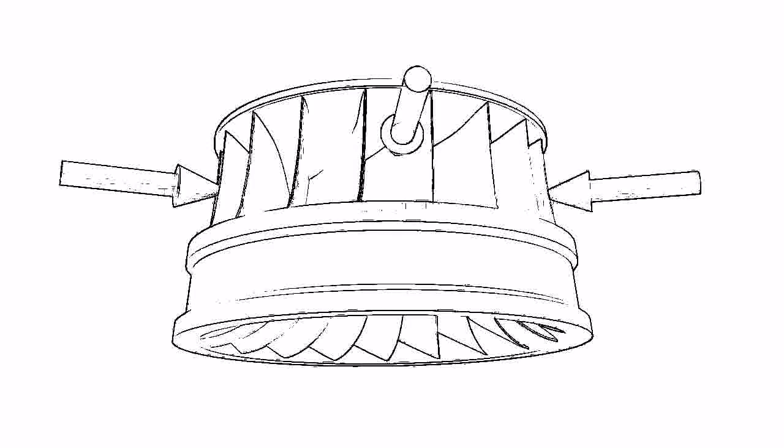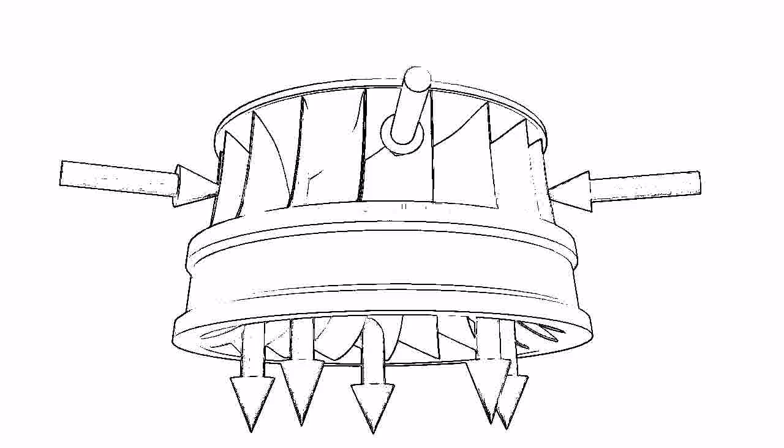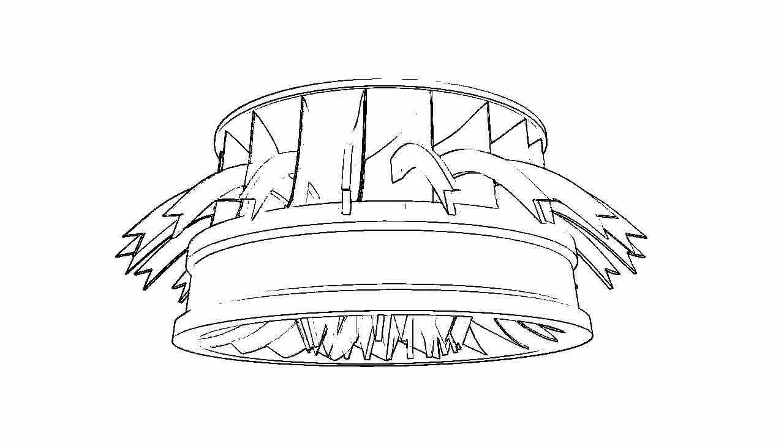In the runner, water enters radially and leaves axially. During the course of flow, water glides over runner blades.